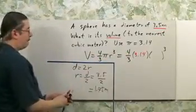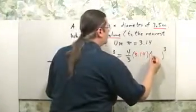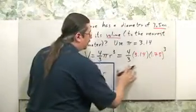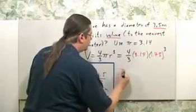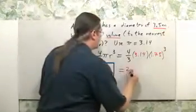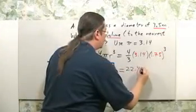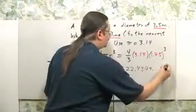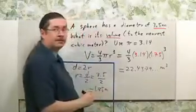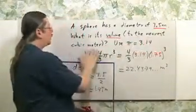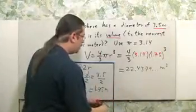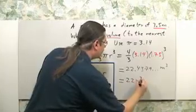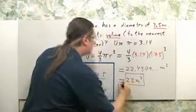Let's put that in there, 1.75. Now, if you very carefully compute this, you're going to get an answer of 22.4379 and some more digits. The units are going to be cubic meters. Now, they want this to the nearest cubic meter, so we're going to have to round to 22 cubic meters. That's going to be our answer.